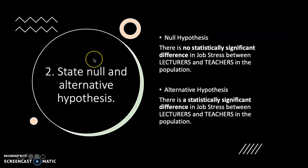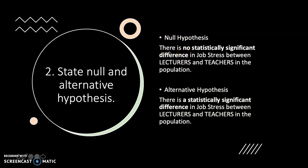After confirming normality, the second step is to state the null and alternative hypothesis. The null hypothesis would be: there is no statistically significant difference in job stress between lecturers and teachers in the population. The alternative hypothesis is: there is a statistically significant difference in job stress between lecturers and teachers in the population.